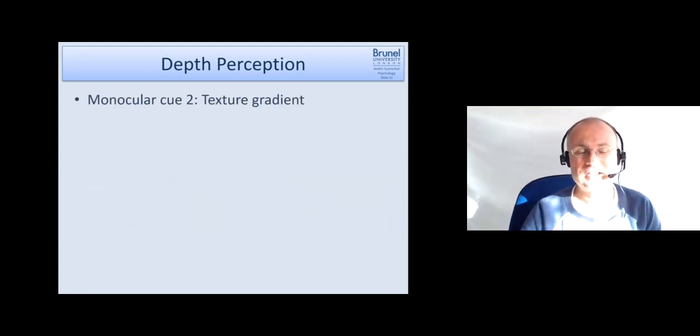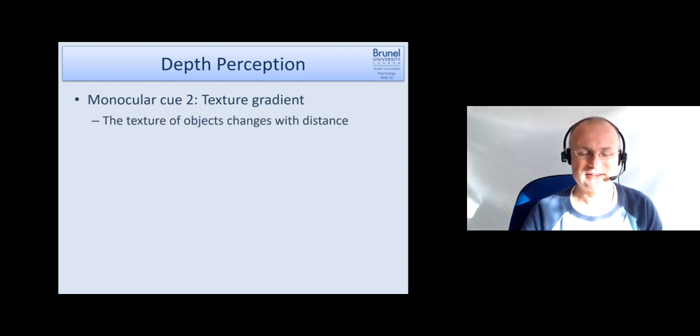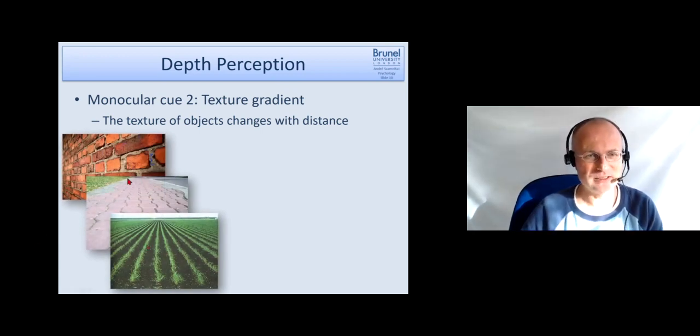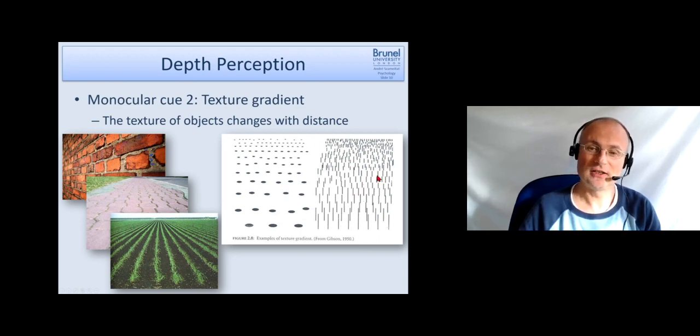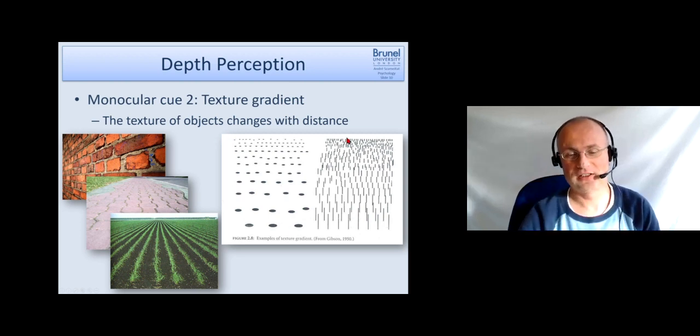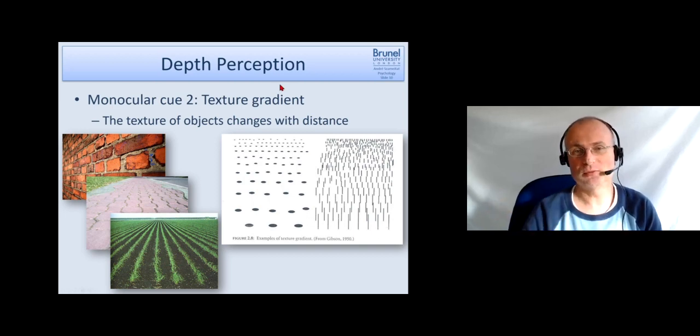Another cue which we use and where one eye is sufficient is texture gradient. This is based on the fact that the texture of an object changes with its distance. May sound complicated but when you see the images it becomes evident - the size of the bricks gets smaller when it goes further away. This even works in very schematic illustrations. You just have lines on a two-dimensional paper here or on the screen, but they create a very strong impression of depth. So these cues are really used by our mind.